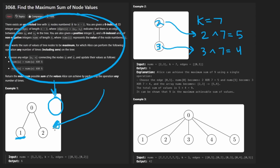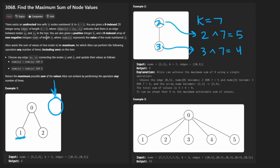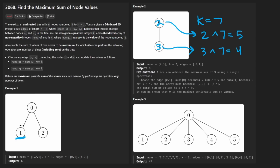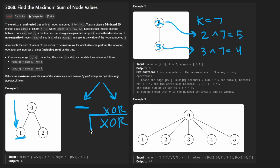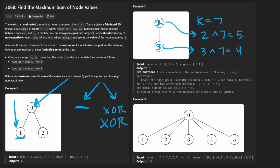We've discovered a simpler version of the same problem: we're allowed to pick any two nodes in the graph and XOR them at a time. For any given node we have two choices — leave it the same or XOR it — but if we XOR one node, we must XOR exactly one other node simultaneously. Each node has only two possible values: original or XOR'd.